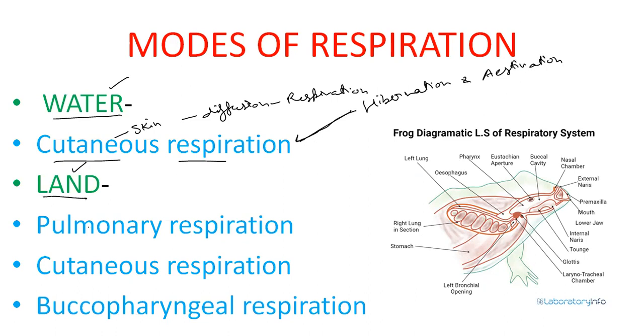At land, pulmonary respiration takes place. Pulmonary respiration means frog respires through lung. Their lung is elongated, pink sac-like structure. But their lungs are not well developed. So air enters through nostrils to buccal cavity to pharynx to lungs and gaseous exchange takes place. Because the lungs are not well developed, at land also frog respires through skin. Cutaneous respiration takes place.